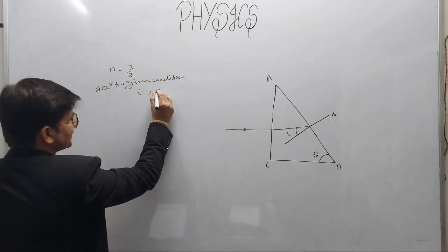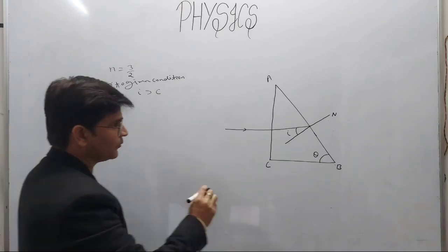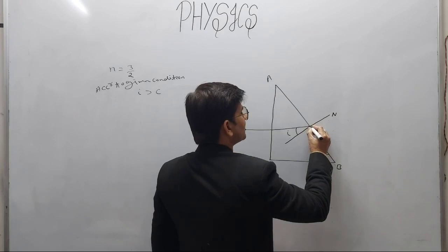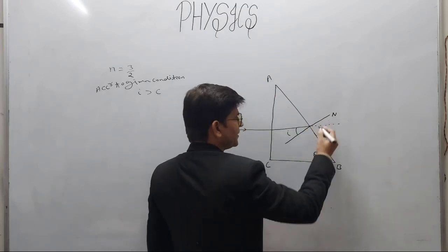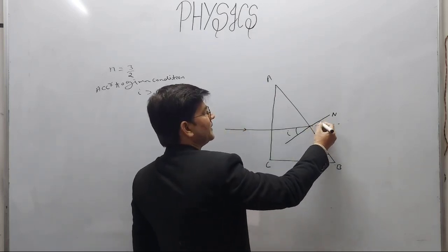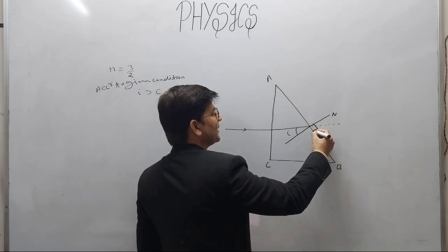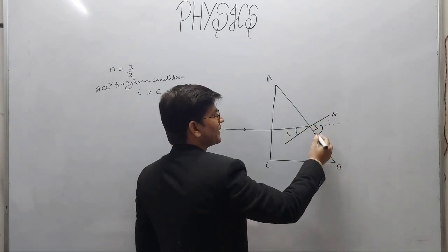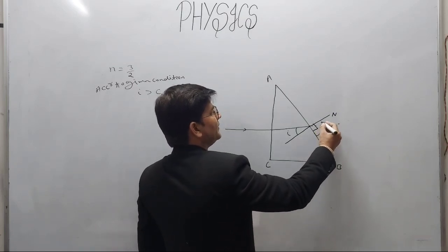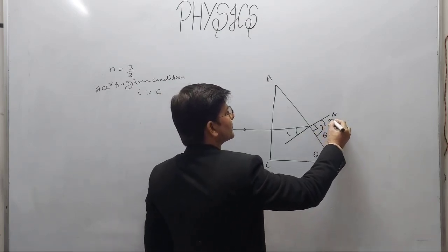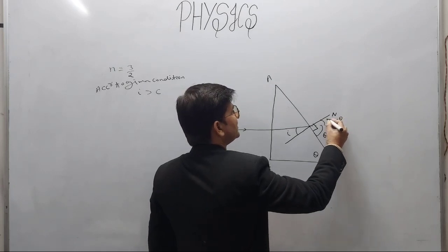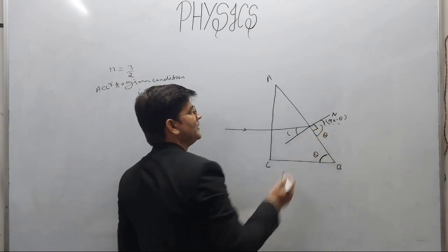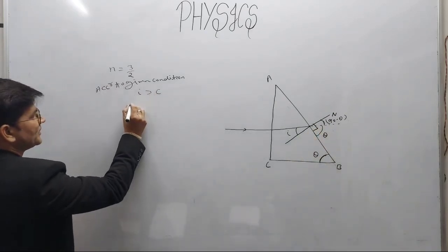So the angle I must be greater than the critical angle φ (phi). Let me find the value of I in terms of theta. If we draw the ray as a straight line and the normal on the surface, this angle is 90° and this angle is theta, so by alternate angles, this angle must also be theta. Therefore this angle is 90° minus theta. So I, being the vertically opposite angle, is equal to 90° minus theta.